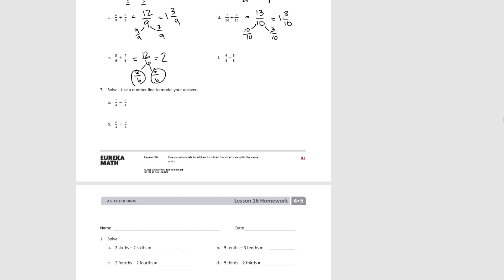For F, our units are eighths: 9 plus 5 is 14. We can decompose this into 8 eighths and 6 eighths, so we get 1 and 6 eighths.